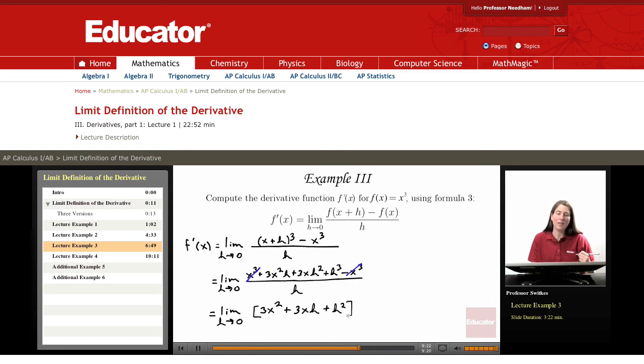And now we take the limit as h heads towards 0. And notice that as h heads towards 0, 3 x times h also heads towards 0.